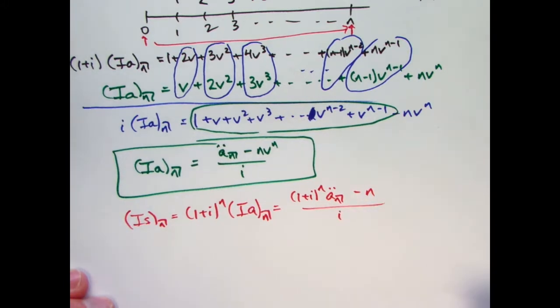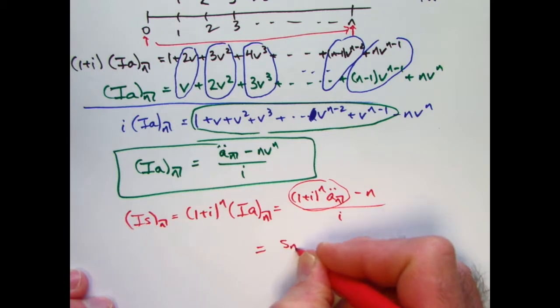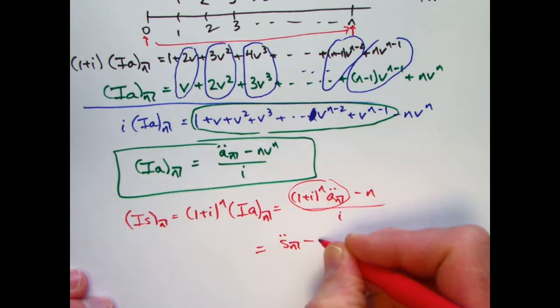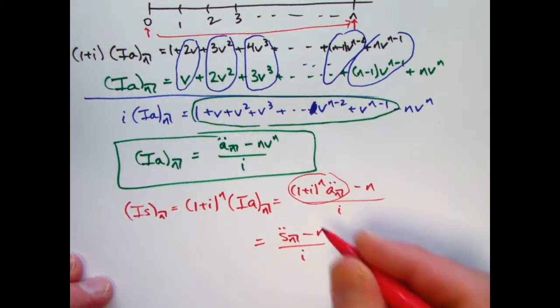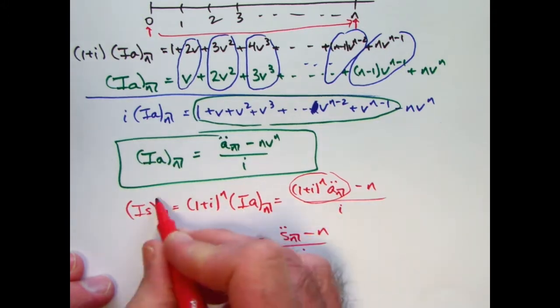And this thing is s_n double dot, the future value of an annuity due with payments of 1 for each period. So we have now derived the second equation.